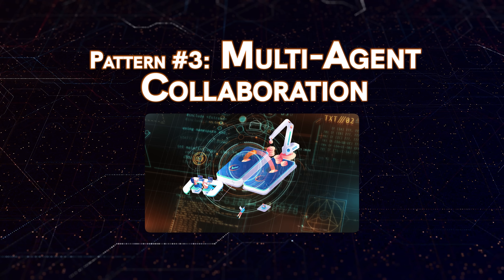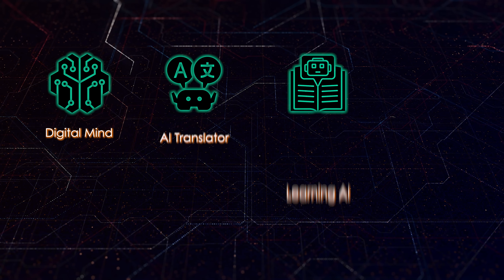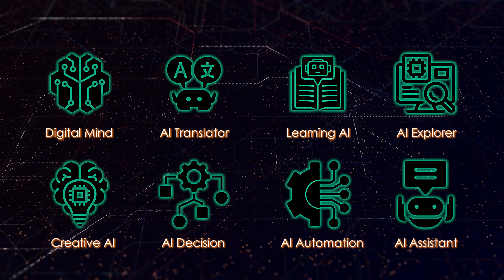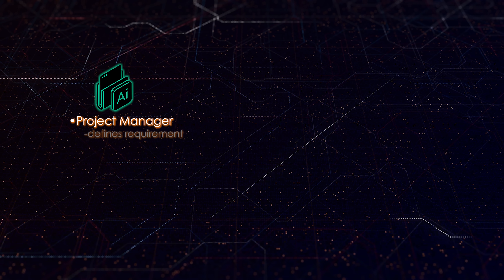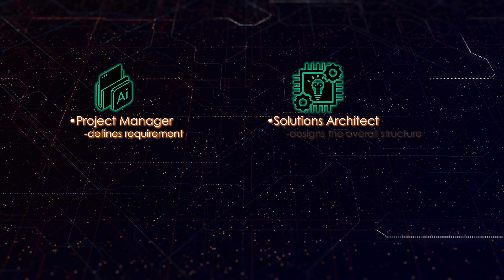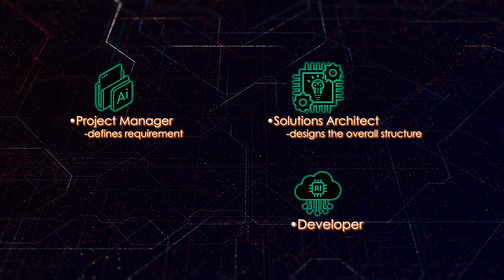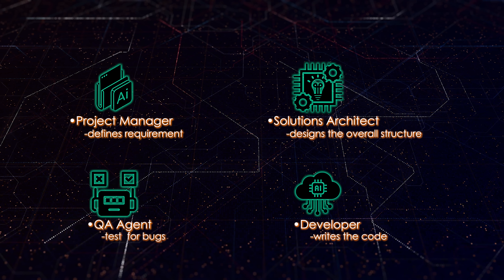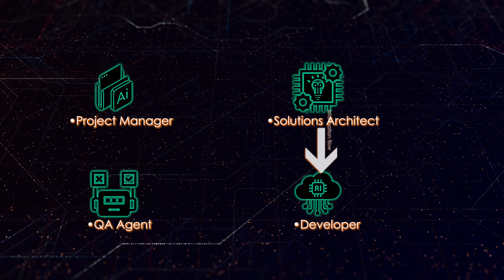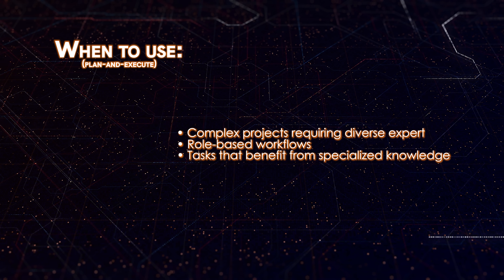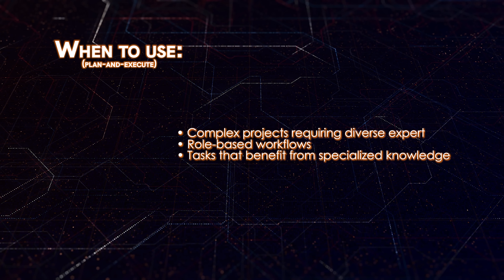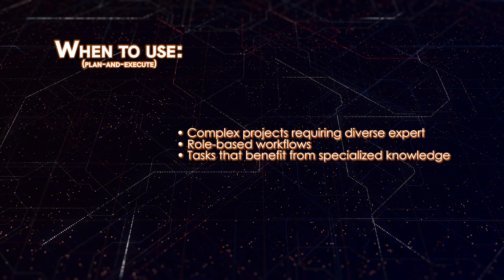Multi-agent collaboration expands on these foundations by creating teams of specialized agents that work together on complex problems. Rather than one agent handling everything, you assign specific roles based on expertise. A coding project might involve a project manager agent that defines requirements, a solutions architect that designs the overall structure, multiple developer agents that write the code, and a QA agent that tests for bugs. These agents communicate with each other, passing information and results as the project progresses.